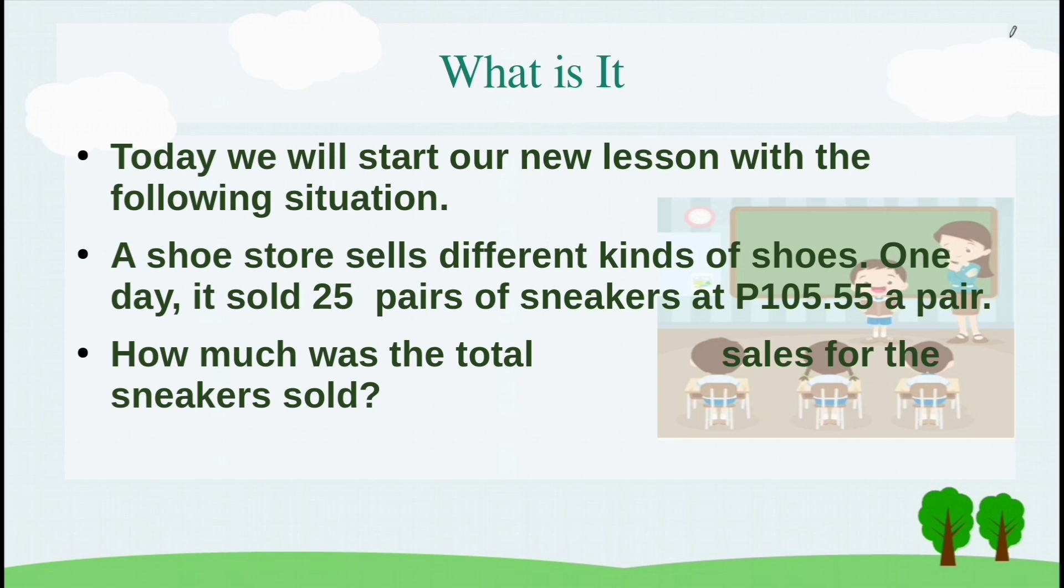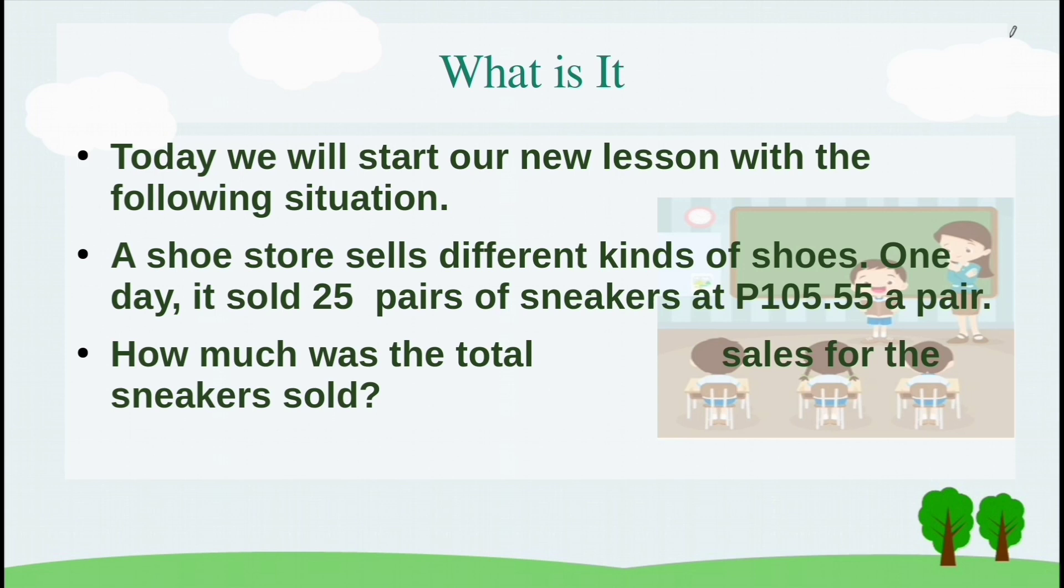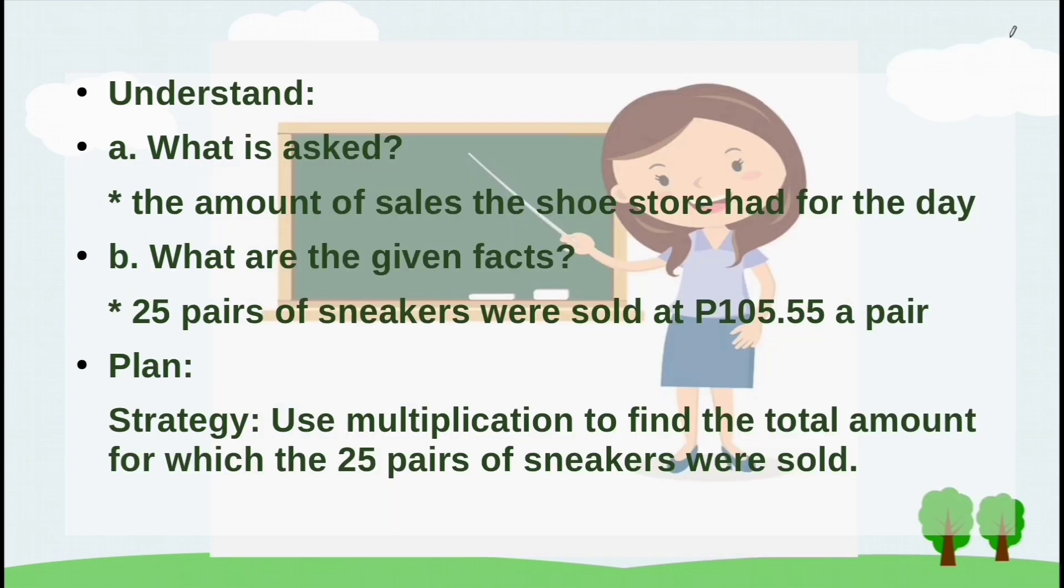What is it? Today, we will start a new lesson with the following situation. A shoe store sells different kinds of shoes. One day, it sold 25 pairs of sneakers at 105.55 pesos a pair. How much was the total sales for the sneakers sold? Understand: What is asked? What are the given facts? Use multiplication to find the total amount for which the 25 pairs of sneakers were sold.